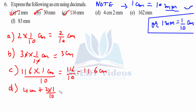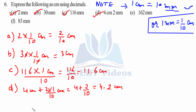Part D: 4 centimeters plus 2 mm. We only need to convert the 2 mm: 2 over 10 equals 0.2. Therefore, 4 plus 0.2 gives 4.2 centimeters. Wait — 2 over 10 is 0.5? No, 2 by 10 is 0.2. So the answer is 4.2 centimeters. Part E: 162 mm — converting into centimeters: 162 over 10 gives you 16.2 centimeters. Don't forget to put the decimal.